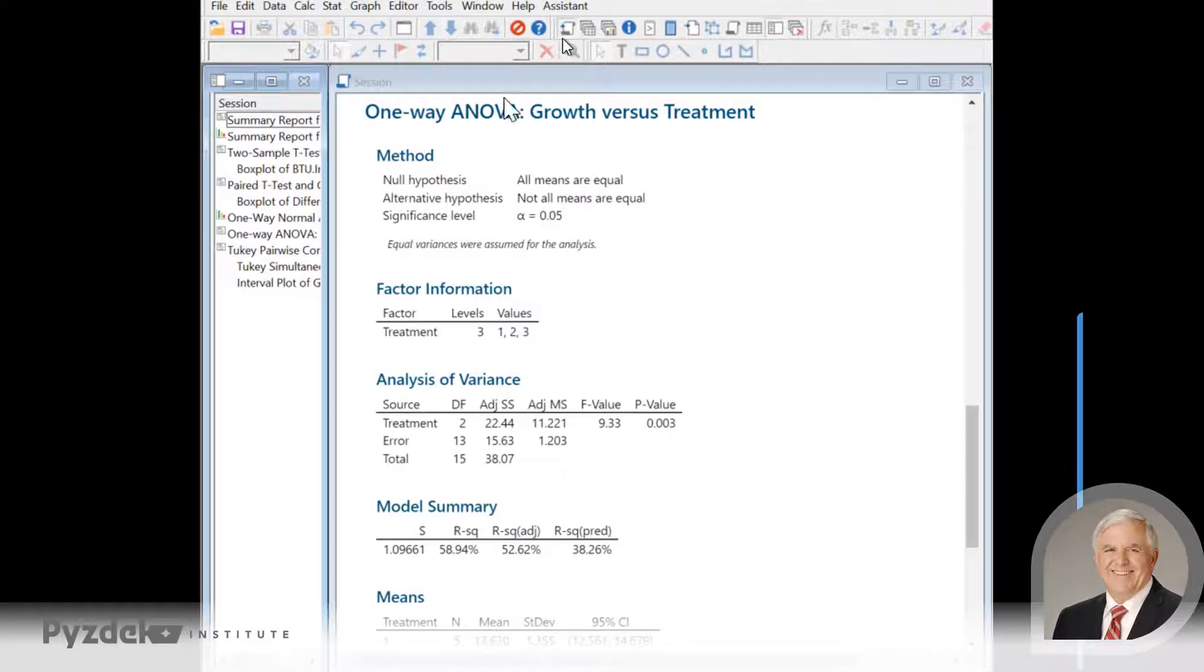Let's go first to the session window. We're looking at a one-way analysis of variance of growth versus treatment. We looked at three treatment levels. And again, as we saw with Excel, the p-value is much smaller than 0.05, indicating that the smallest mean and the largest mean are significantly different from one another.